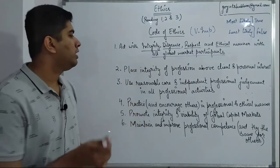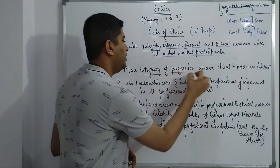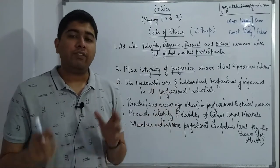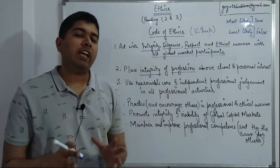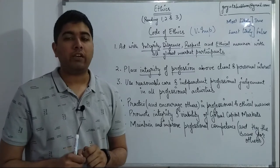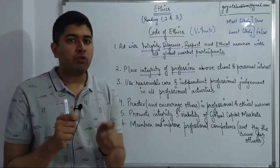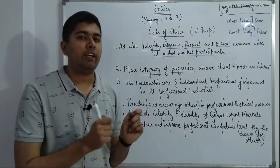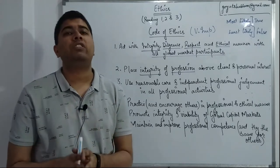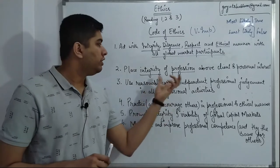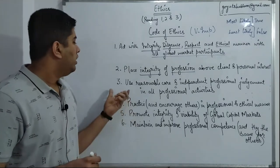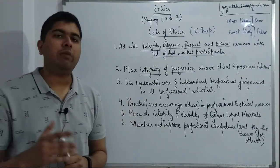Code of Ethics number two: place the integrity of the profession above client and personal interest. In simple terms, profession comes first. If any act is going to compromise the integrity of the CFA profession, that act must be the top priority to manage — ensuring it does not tarnish the integrity of the profession.